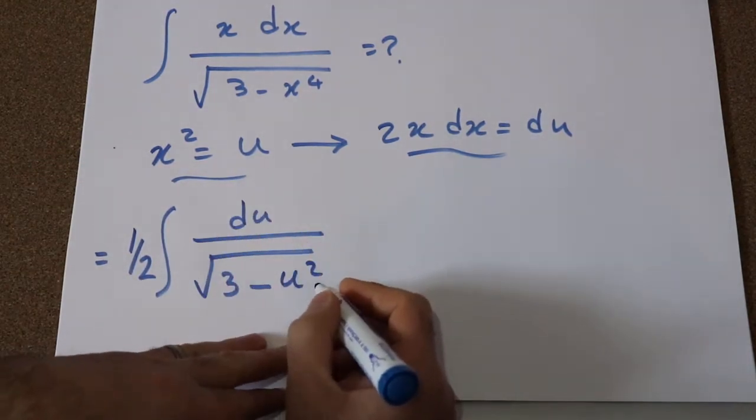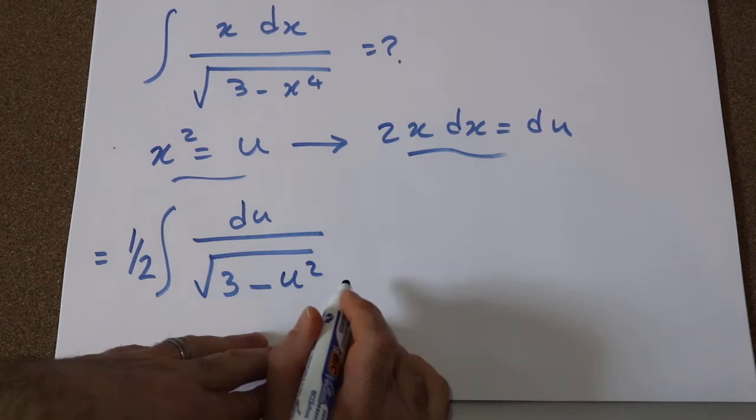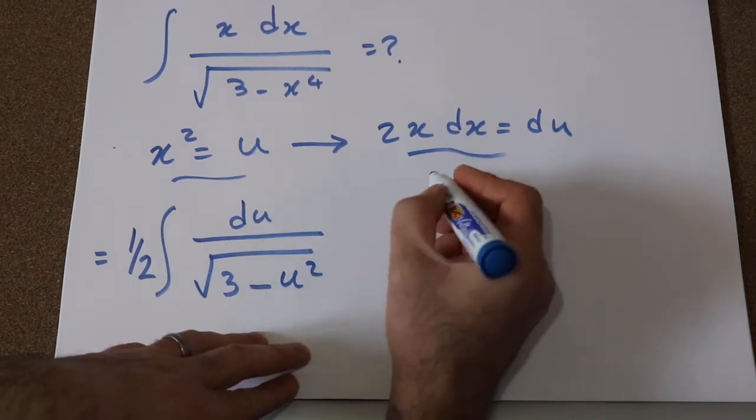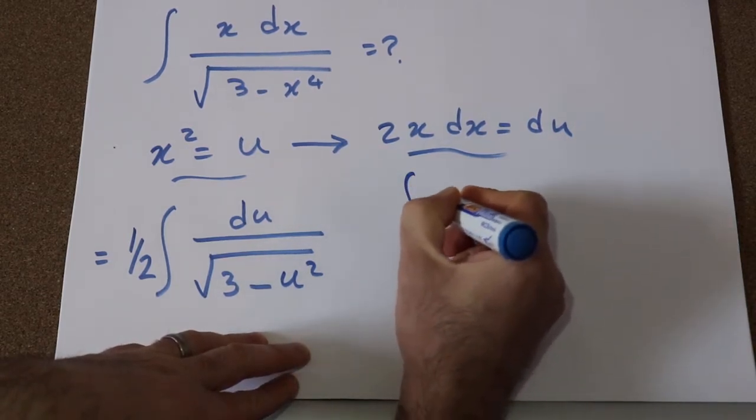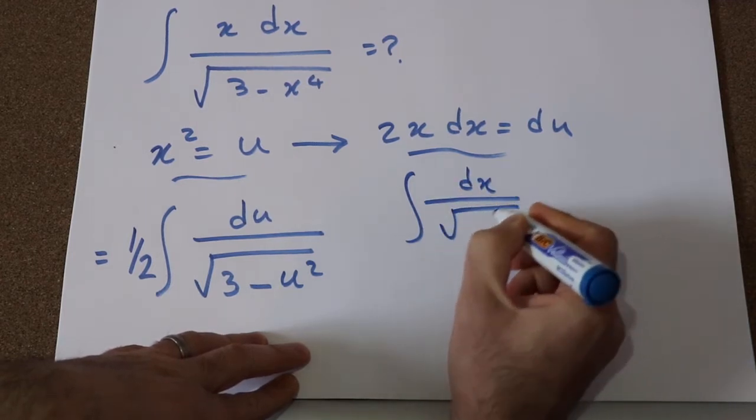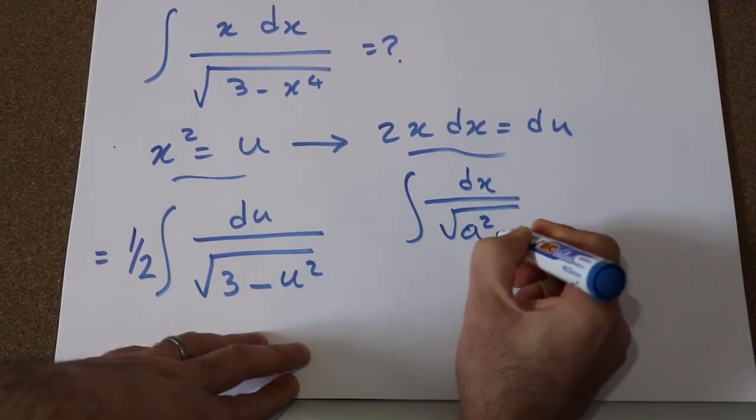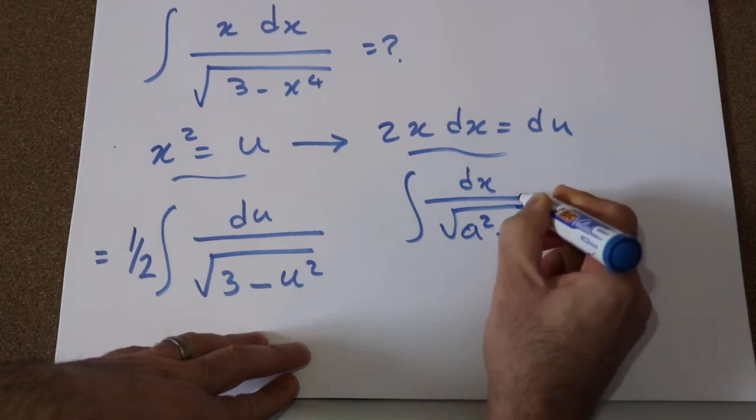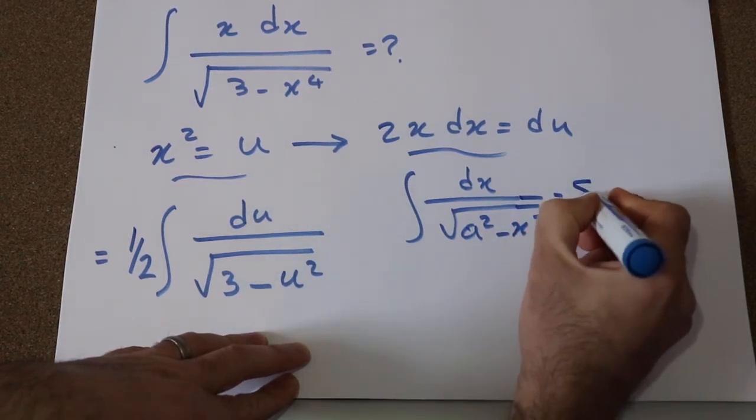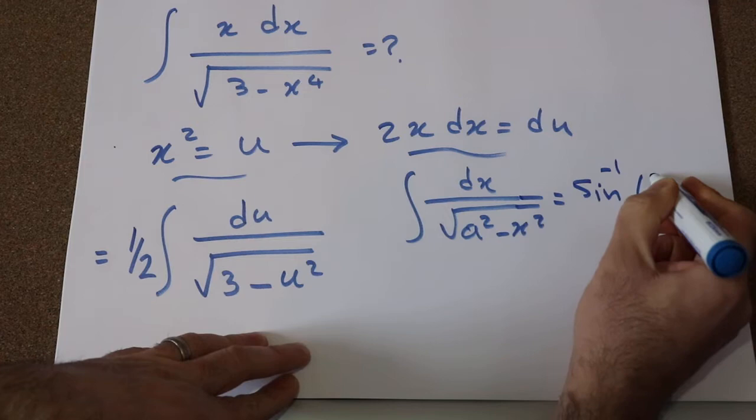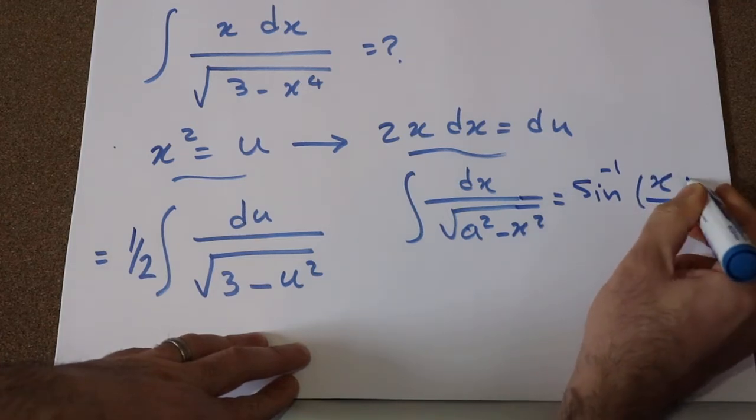Okay, so this integral now you can solve it using the table of integrals. From the table of integrals, we know that the integral of dx divided by square root of a squared minus x squared is equal to sine inverse of x divided by a.